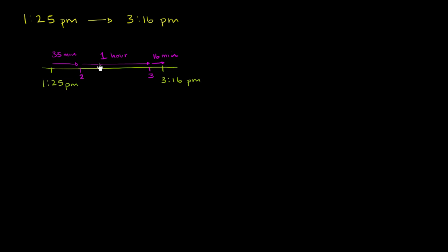So the total amount of time that passes is going to be 1 hour plus 35 minutes plus 16 minutes. So 35 plus 16, 5 plus 6 is 11, 1 plus 3 is 4 plus 1 is 5, so it's 51 minutes. So it's 1 hour and 51 minutes.